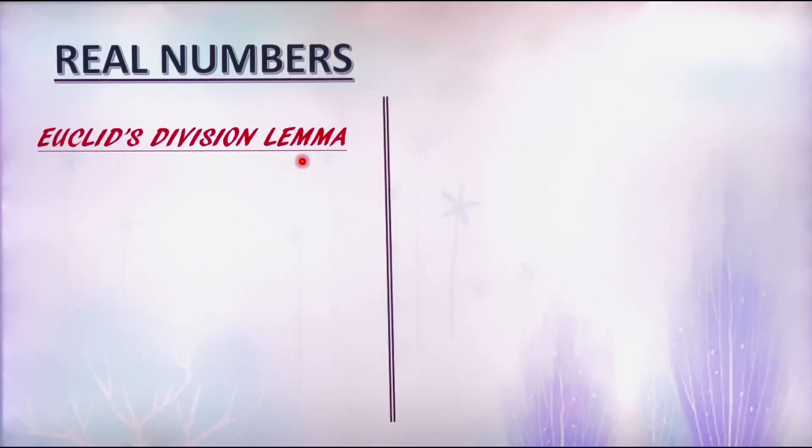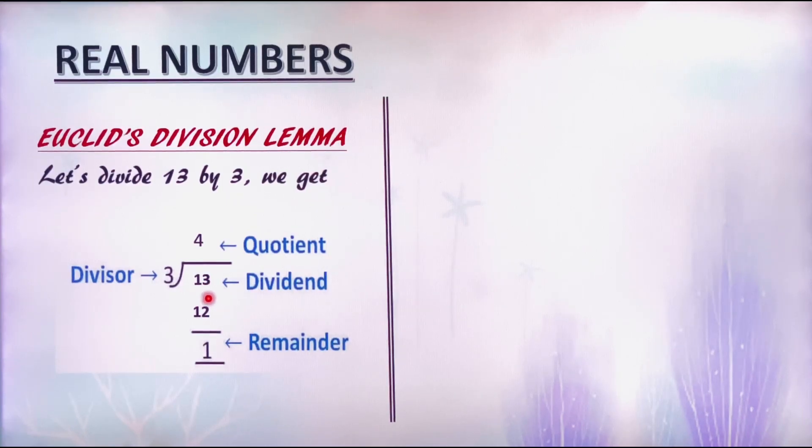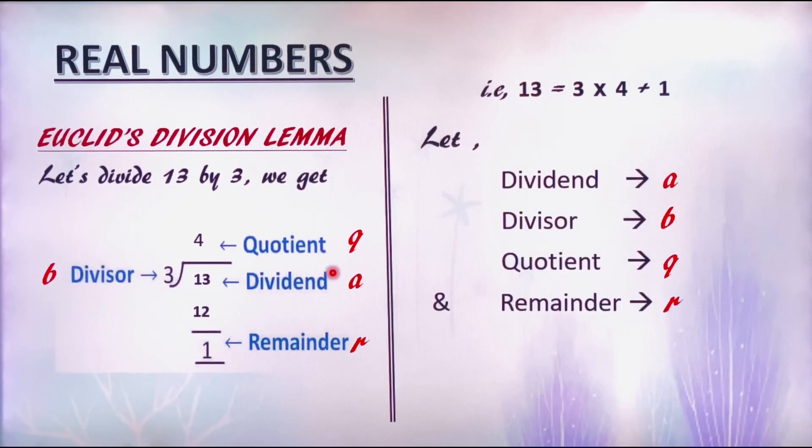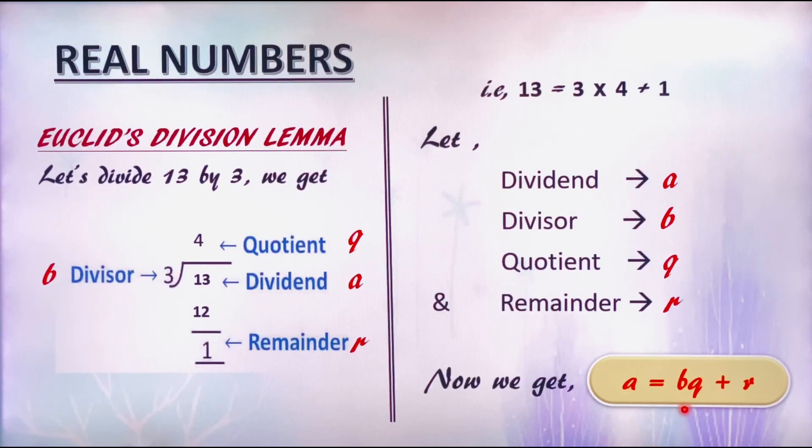Let us illustrate this lemma using examples. Divide 13 by 3. Here, 13 is the dividend, 3 is the divisor, 4 is the quotient and 1 is the remainder. Now, we get a relation 13 equals 3 into 4 plus 1. Taking a as the dividend, b as the divisor, q as the quotient and r as the remainder, we get a equals bq plus r. That is, dividend equals divisor into quotient plus remainder.